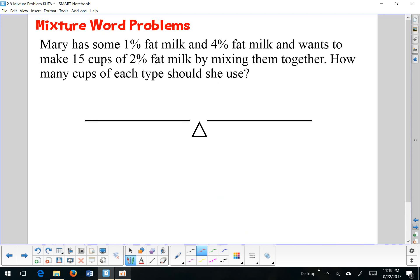Mary has some 1% fat milk and 4% fat milk, and she wants to make 15 cups of 2% fat milk by mixing them together. So we've got a mixture here. We have a lower percentage, we have a higher percentage, and then we have our in-between measure. It tells us that she wants to make 15 cups, but she doesn't tell us what the quantity of each item is, only what the total is. So the total is 15 cups.